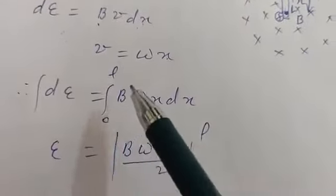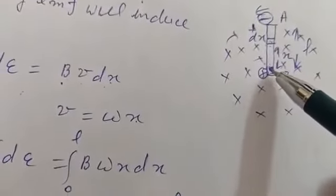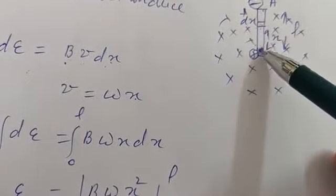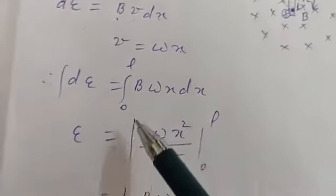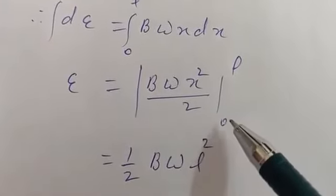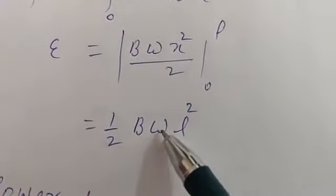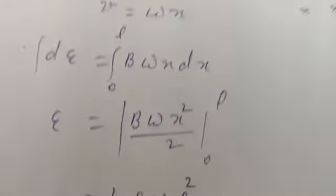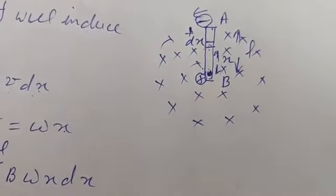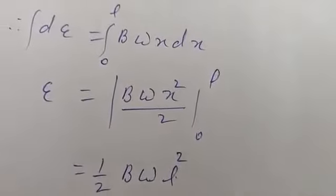Now we integrate both sides. The limits are 0 to L, since x varies from 0 at the axis to L at the tip. Integrating, it will be equal to Bω·x²/2 evaluated from 0 to L. Substituting the limits, it becomes ½·B·ω·L². So if a rod is rotating on its axis with angular velocity ω, the magnitude of the induced EMF will be equal to ½BωL².